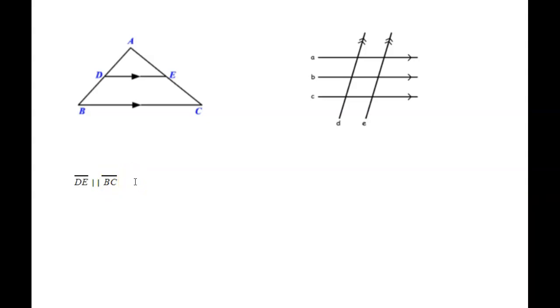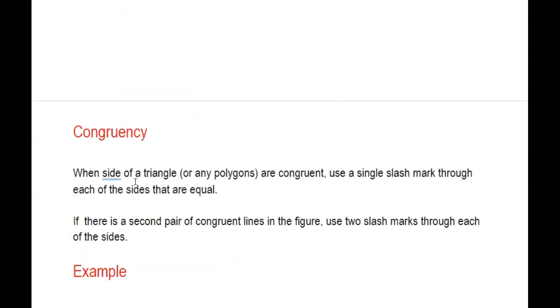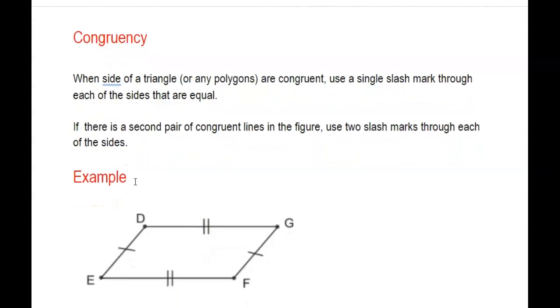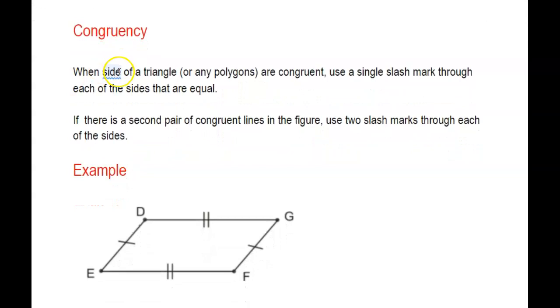That is the parallel symbol. Now how is that different from congruent? Remember, congruent basically just means equal. When sides of a triangle or any polygon are congruent, use a single slash mark through each of the sides that are equal.